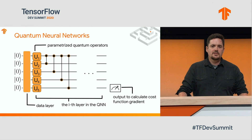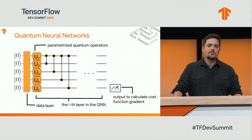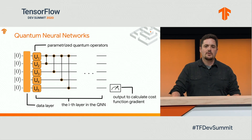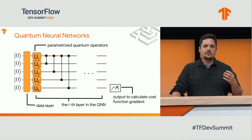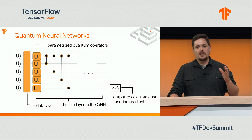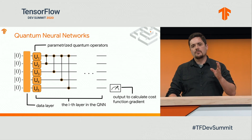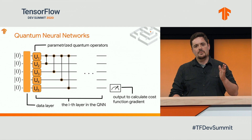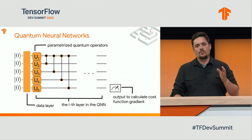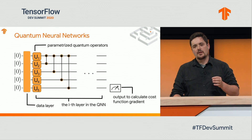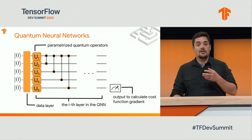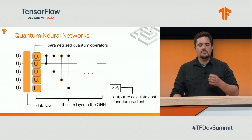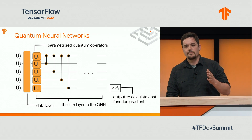To start, I'd like to give you a little bit of an intuition about quantum neural networks. A quantum neural network is a type of circuit where we have a register of qubits with which we load some data, whether it's classical or quantum. For our project, we looked at classical data, specifically the MNIST data set.